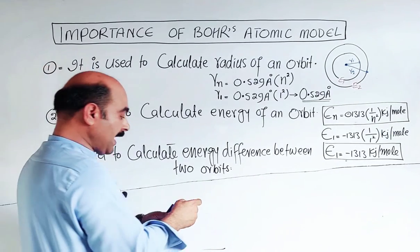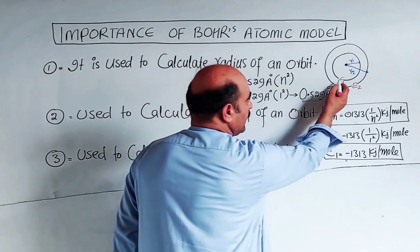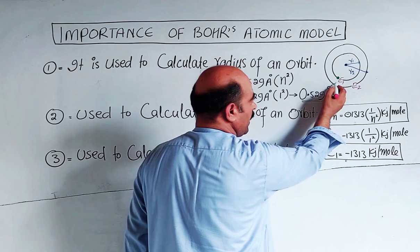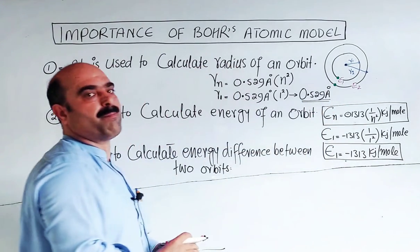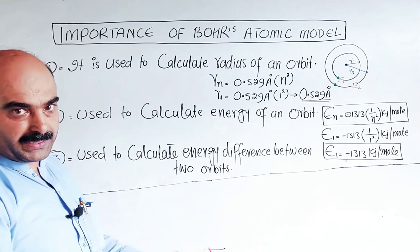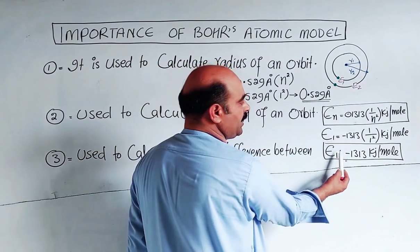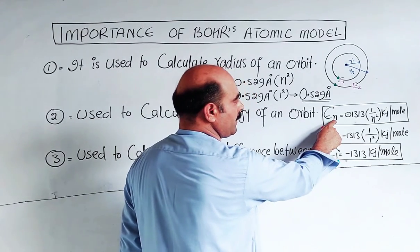How much energy difference is there between two orbits? We represent it as delta E. For example, one orbit has its energy and another orbit has its energy. We take the higher orbit energy minus the lower orbit energy to get the difference. You'll learn more details in higher classes.